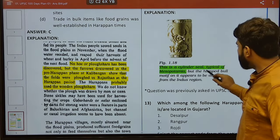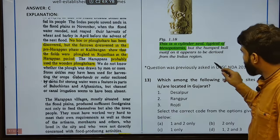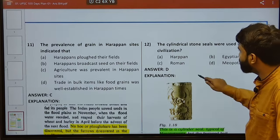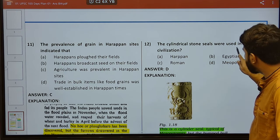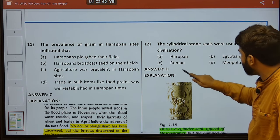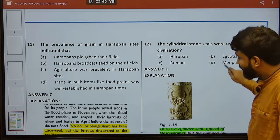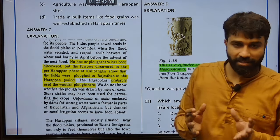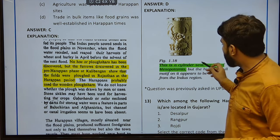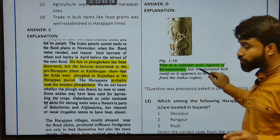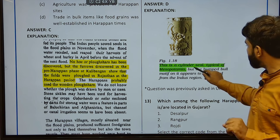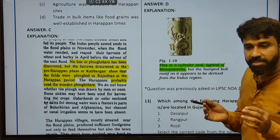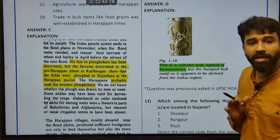This is a cylindrical seal, typical of Mesopotamia, but the humped bull motif on it appears to be derived from the Indus region. The cylindrical stone seals were used in Mesopotamian civilization. You can find the similarity — in the Mesopotamian region, they also used this humped bull motif on cylindrical seals. The pictographic representation was more or less akin to the IVC.